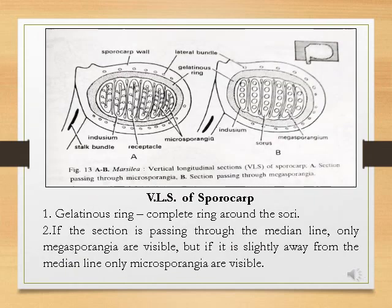In the vertical longitudinal section of the Marsilea sporocarp, you can find the gelatinous ring in the form of a complete ring around the sori. If you take the vertical longitudinal section exactly along the median, you can see only the megasporangia — as shown in diagram B, only megasporangia are present inside the sorus. If you take a section slightly away from the median line, you can see only the microsporangia, as shown in diagram A.